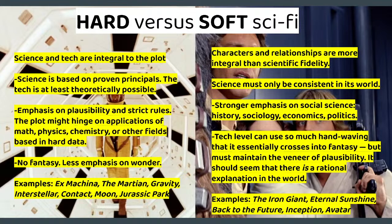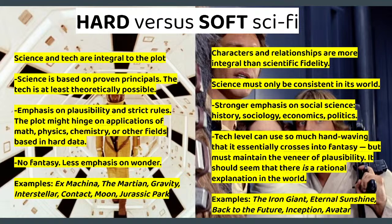Superhero stories tend to fall under soft sci-fi. X-Men is super soft sci-fi — characters get powers from a gene mutation called the X gene, but that gene can do anything: control weather, super healing, super strength, magnet powers. It's sci-fi, but as soft as it gets, because the gene just does whatever we want it to do.